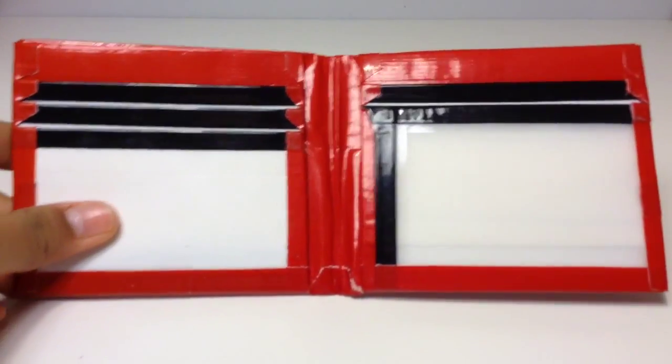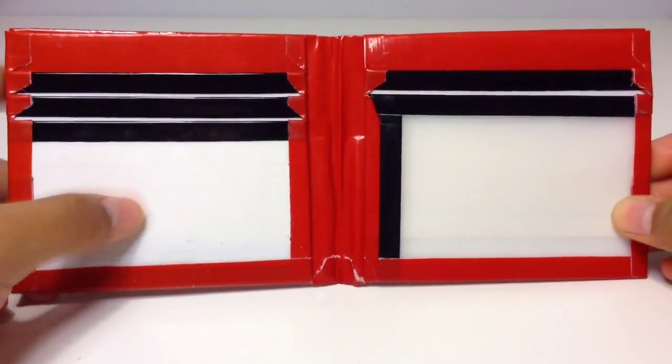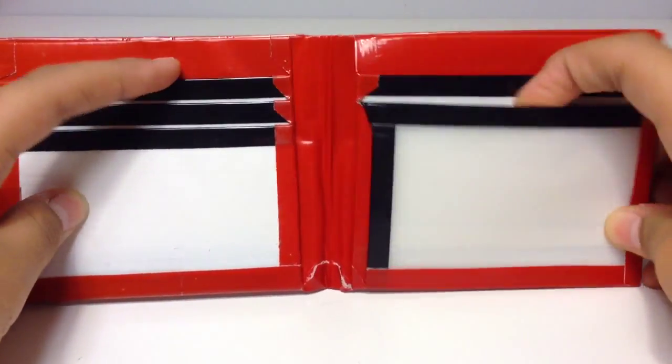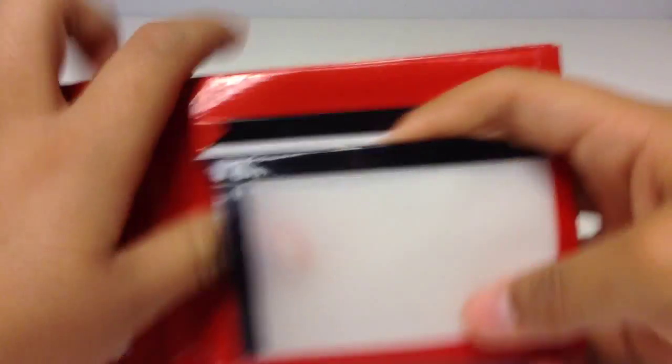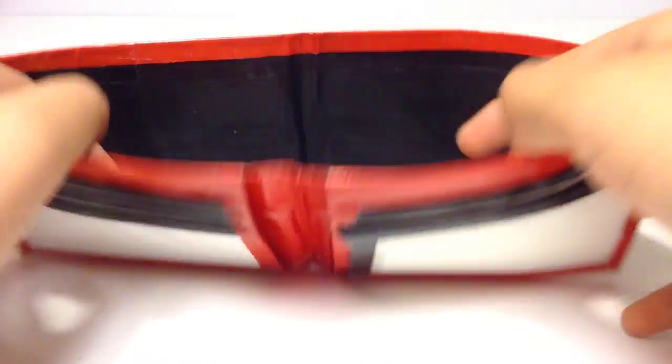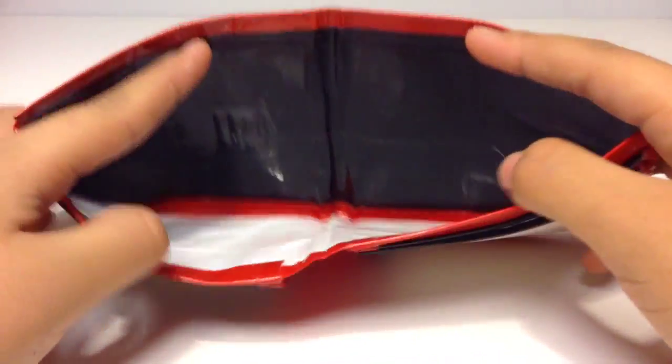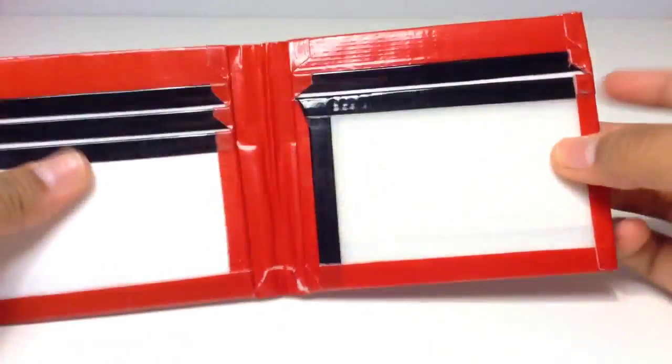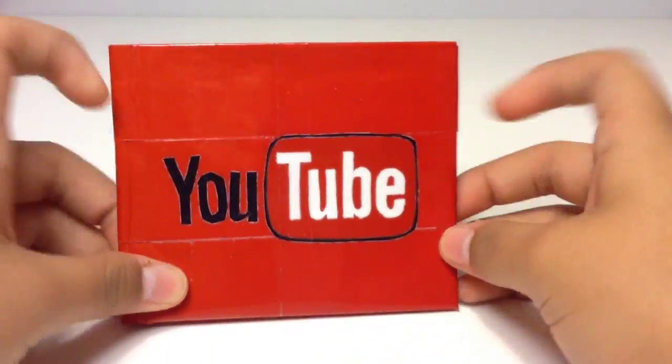So the first wallet that I have is this one. It's white pockets, black trim on a red bifold. Now I bet you can guess what this is already, but it's got five pockets, ID, and two hiddens, with a black and white billfold. It's no sticky, and then it has the YouTube logo.